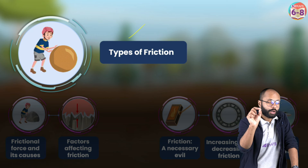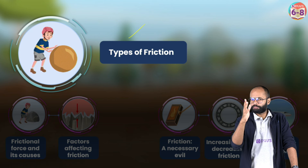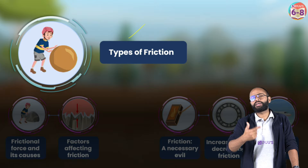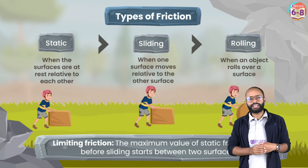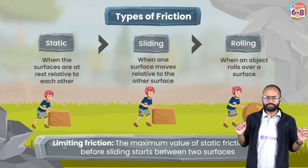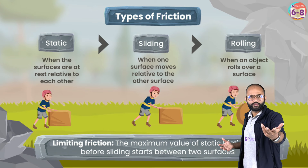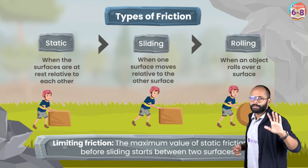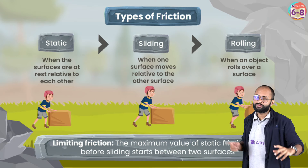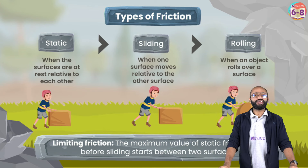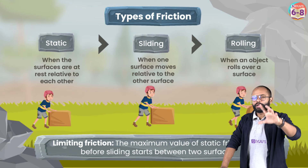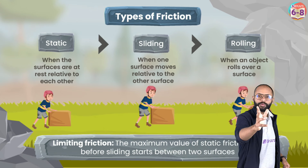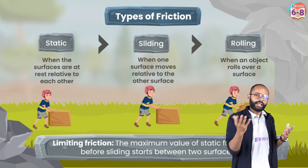Types of friction is a topic from which many exam questions come, so please understand this well. There are three types of friction. The first is static friction. When you are applying force on a body and the body is not moving, the friction acting at that point is called static friction. The body is static — at rest — and friction is cancelling your applied force. Static friction can vary from zero up to a maximum value called limiting friction.